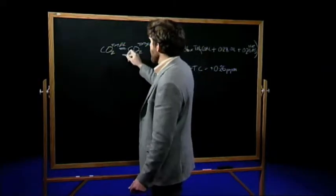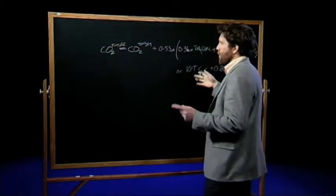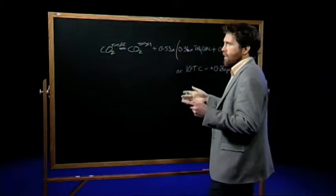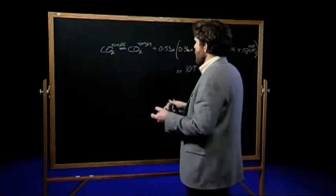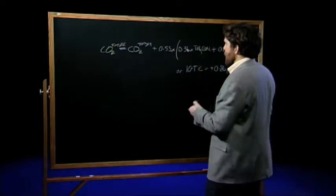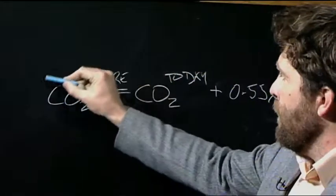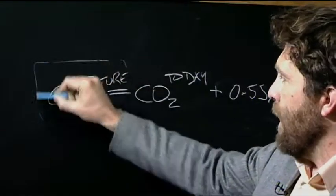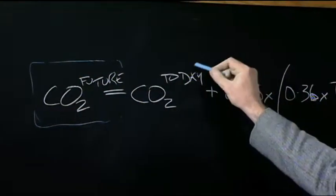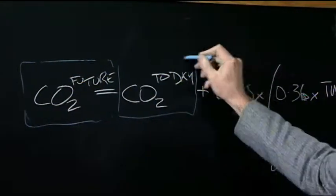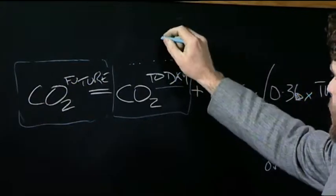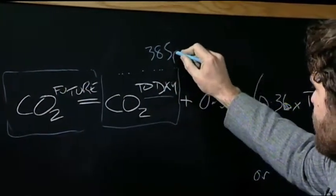So what does this say? This equation was really come up with by a guy called Kumi in a book in the 80s, and it's grossly correct today. The carbon monoxide concentration in the future, measured in parts per million, is going to be today's CO2 concentration. And today's CO2 concentration is 385-ish ppm.